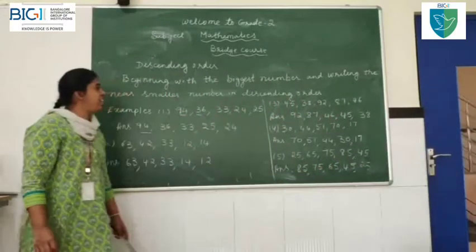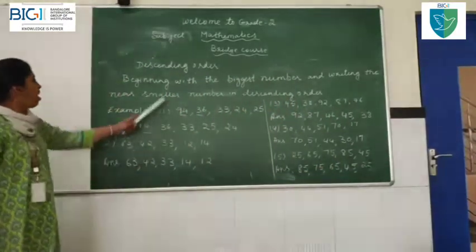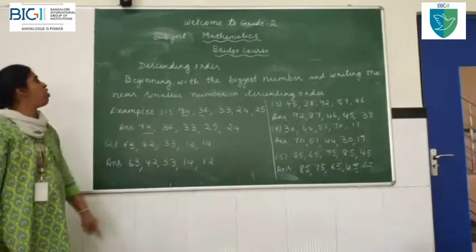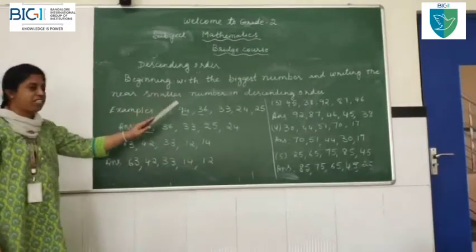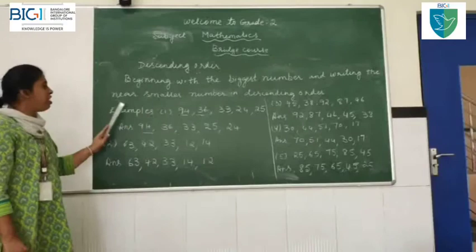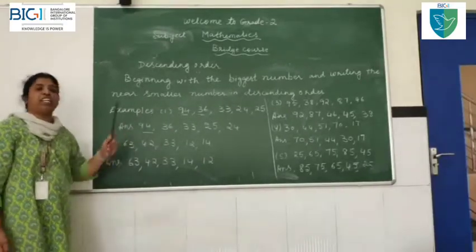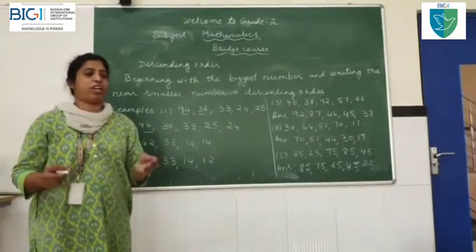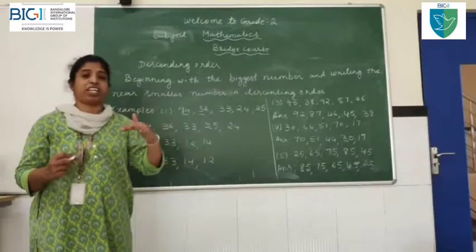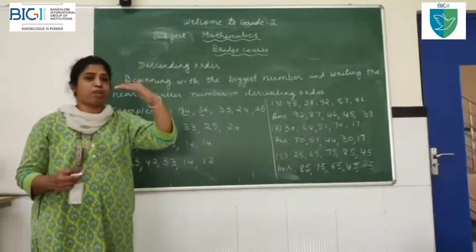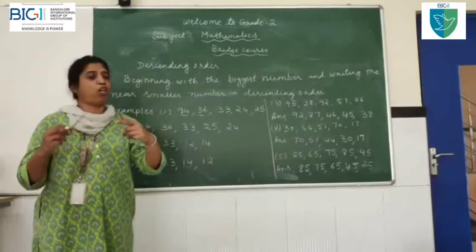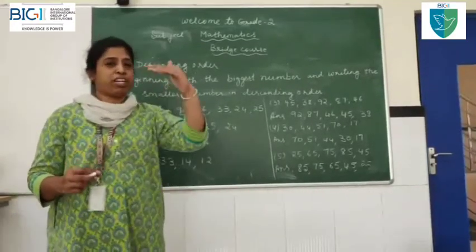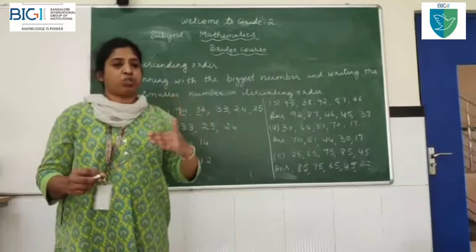You all understand? I hope you all understood. Now, descending order — I repeat: Descending order means we begin with the biggest number and write the near smaller number in descending order. Ascending order means from the smallest number to the bigger number. Descending order means from the big number to the smaller number.